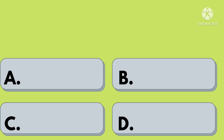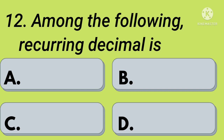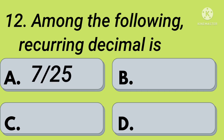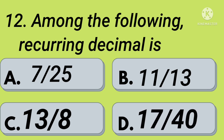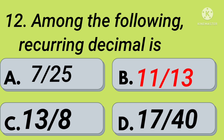Twelfth question: among the following, a recurring decimal — option A: 7 by 25, option B: 11 by 13, option C: 13 by 8, option D: 17 by 40. Your time starts now. Option B: 11 by 13.